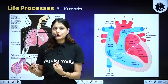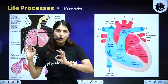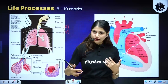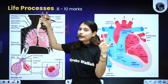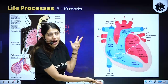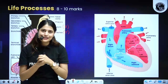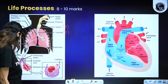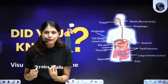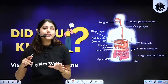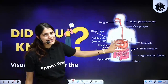One more topic you cannot miss is the human excretory system — about the kidney and urinary bladder. To recap all important topics from this chapter: autotrophic and heterotrophic nutrition, photosynthesis, human respiratory system, human heart, and human excretory system. Remember, 60% of students who score high marks in biology do so just by understanding the diagrams from this chapter — visual learning is the key.